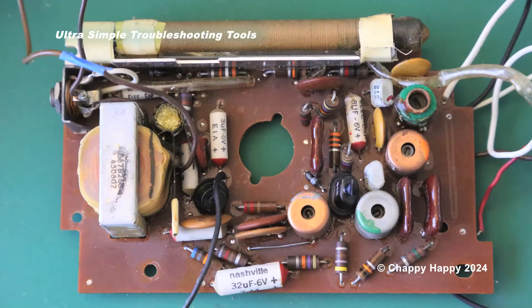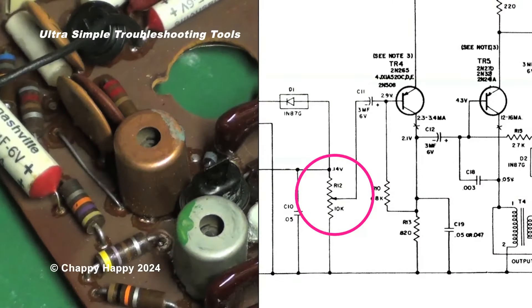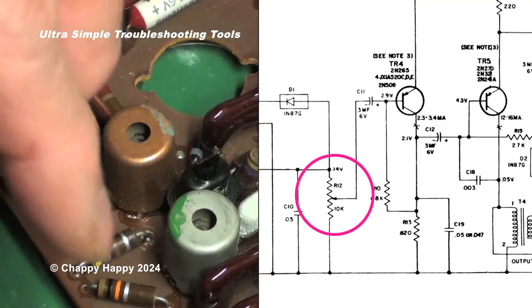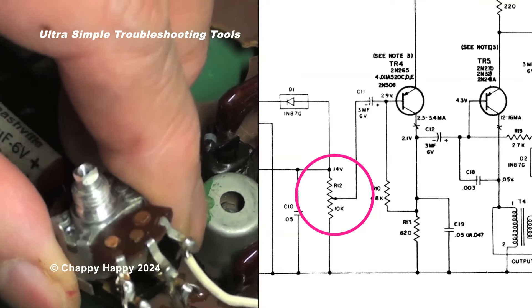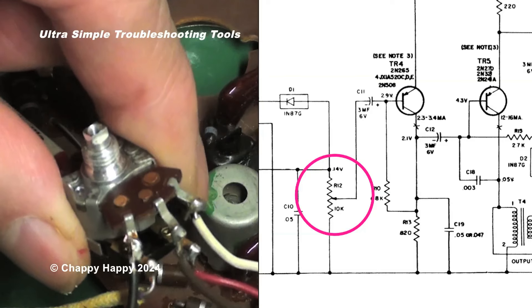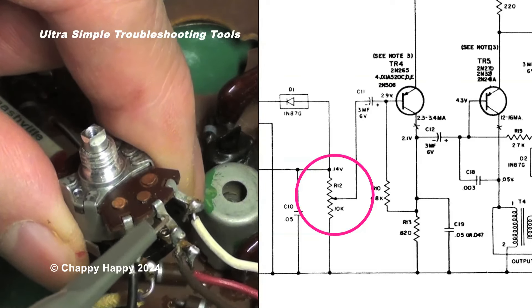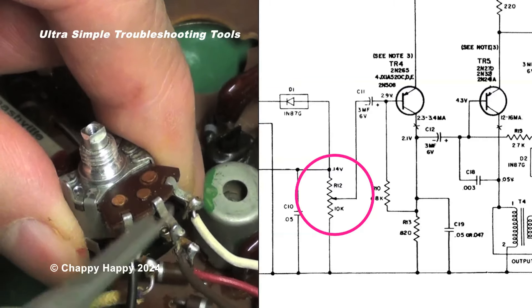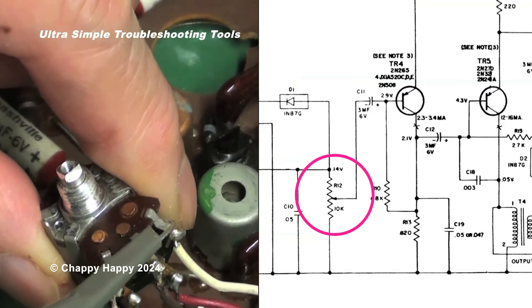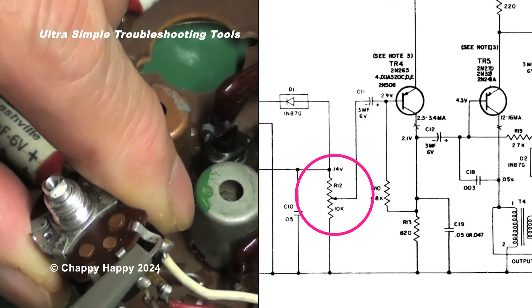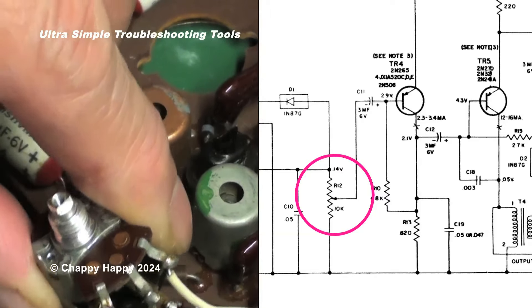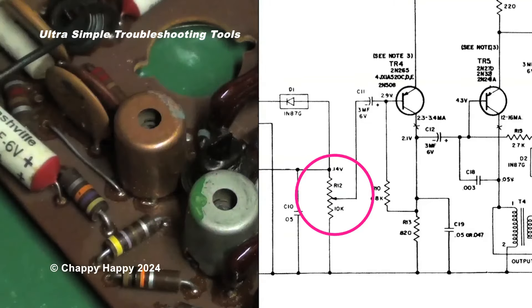This radio doesn't work. So let's troubleshoot this radio with the signal injector. First, I injected the signal to the AF stage. I can hear the sound from the radio speaker. That means the AF stage is working.